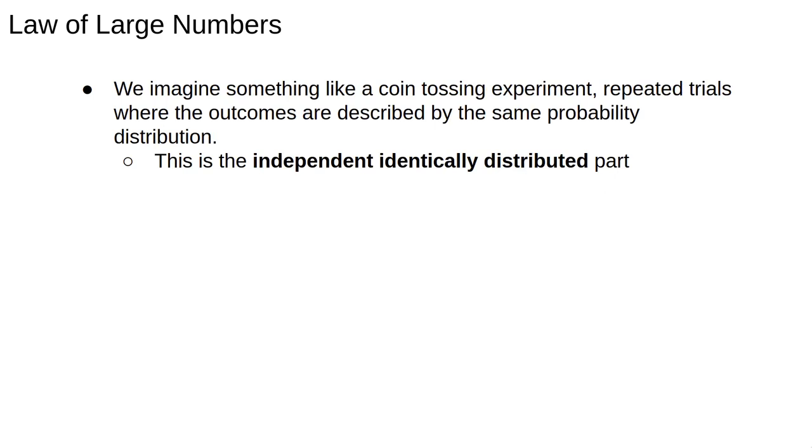We can break it down a bit more. We imagine something like a coin tossing experiment, repeated trials where outcomes are described by the same probability distribution. This is the independent identically distributed part. The sample mean is our best guess at the typical result after making n trials, say it's the average number of heads.